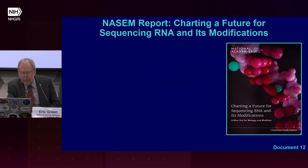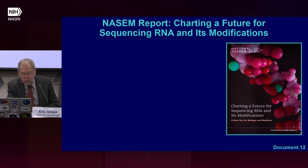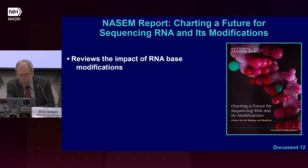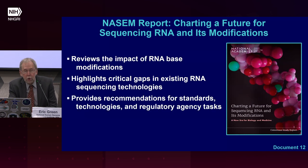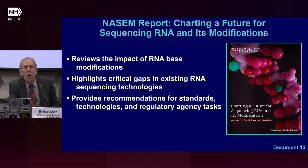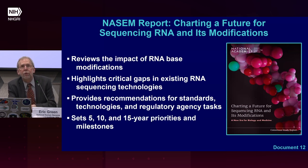In February, the National Academies of Sciences, Engineering, and Medicine released their highly anticipated report entitled Charting a Future for Sequencing RNA and Its Modifications. This report details findings from a two-year consensus study sponsored by the Warren Alpert Foundation, the National Institute of Environmental Health Sciences, and NHGRI. It focuses on technology and infrastructure needed for direct end-to-end sequencing of RNA and the chemical modifications of RNA bases — the epitranscriptome. The report reviews current impacts of RNA-based modifications on biology, health, and biotechnology; highlights critical gaps in existing RNA sequencing technologies; and provides recommendations for standards, technologies, and regulatory tasks, with 5-, 10-, and 15-year priorities and milestones.